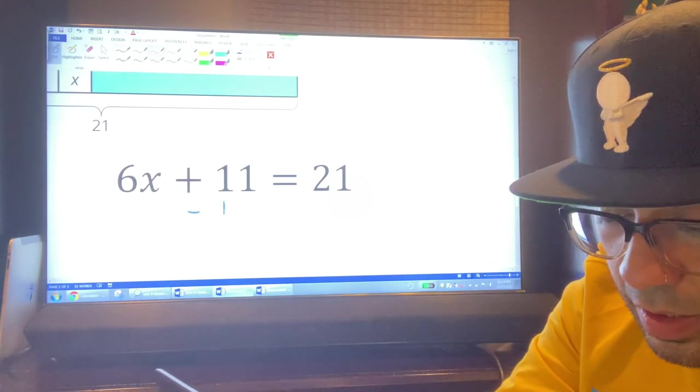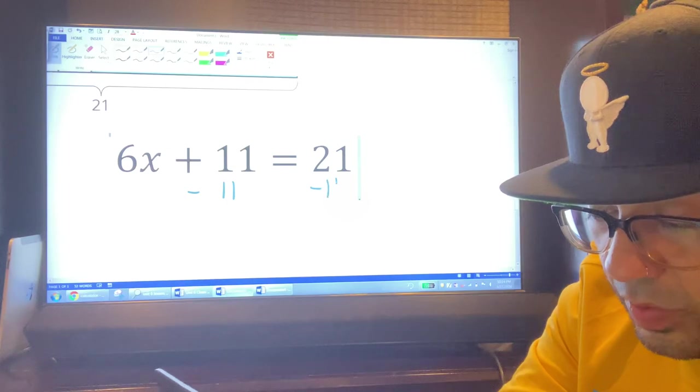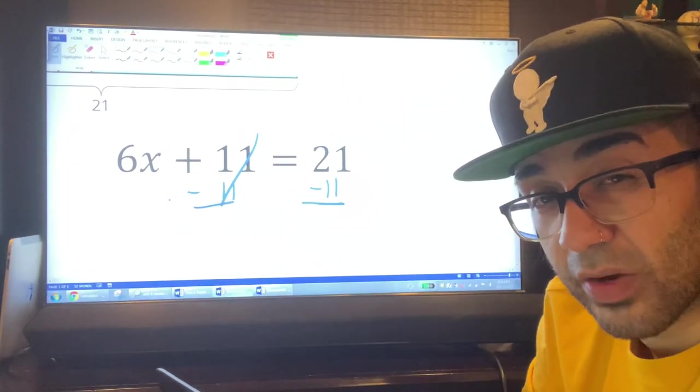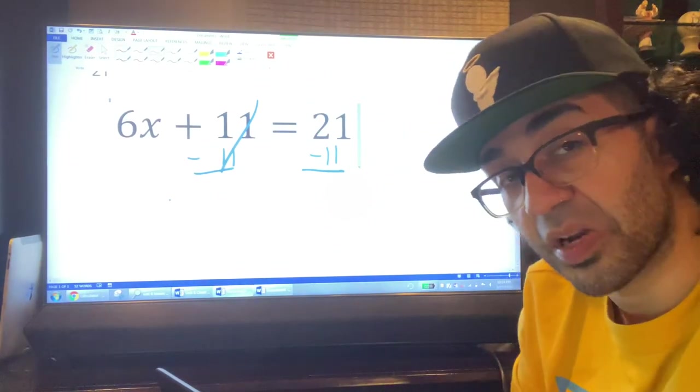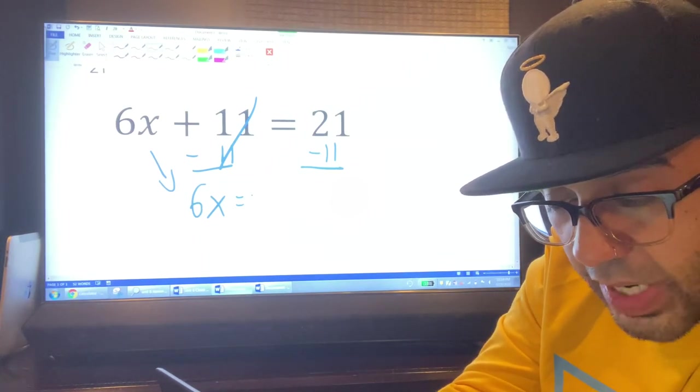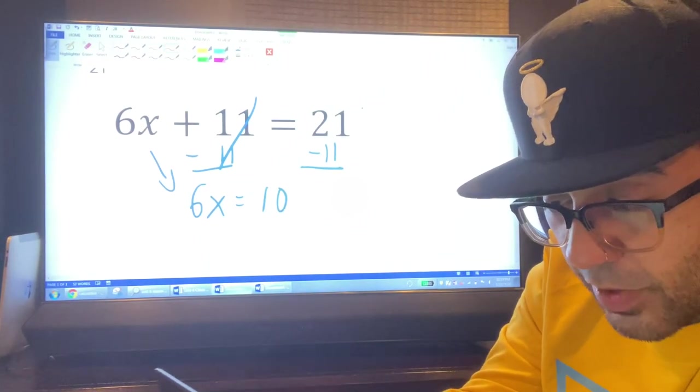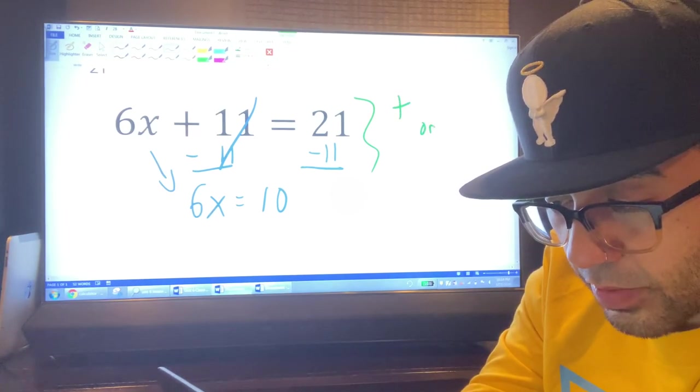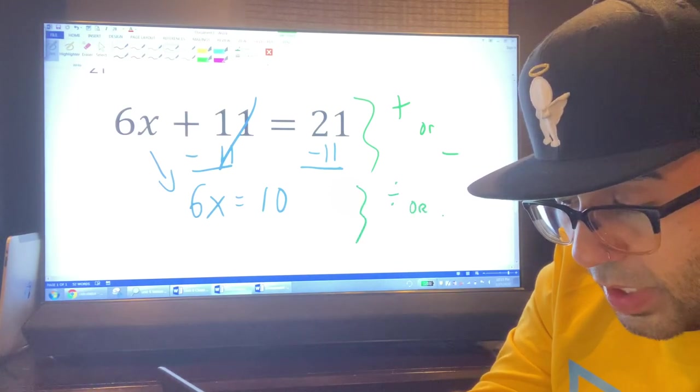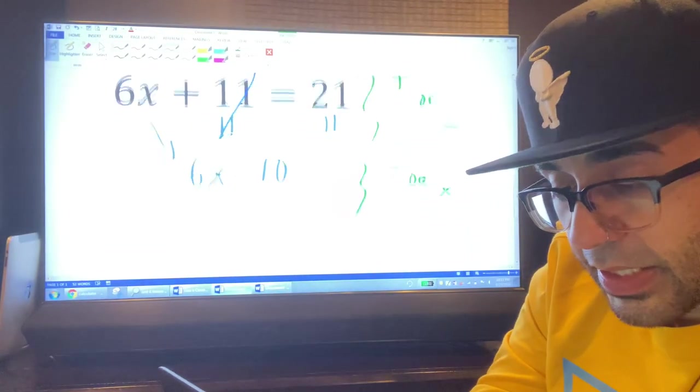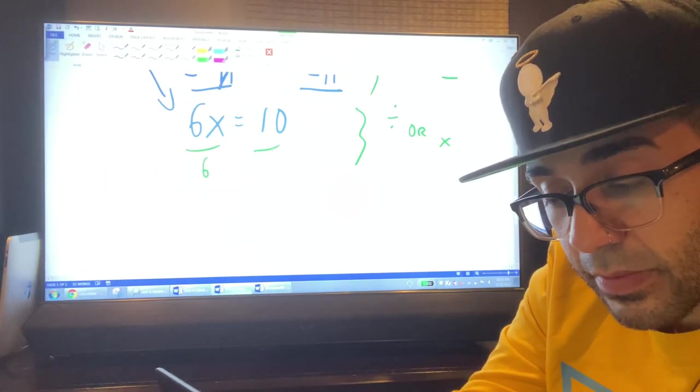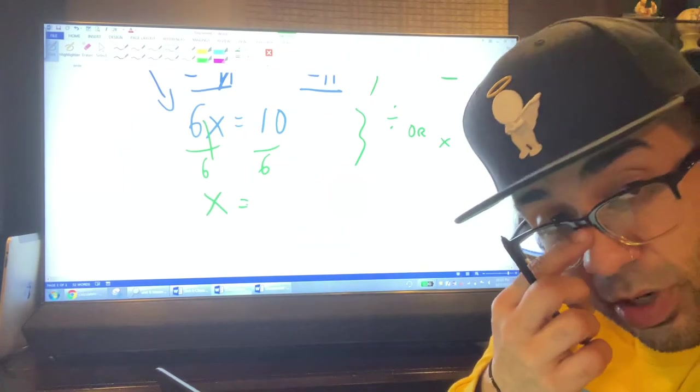First thing I would suggest to do is to subtract 11 from both sides. And I subtract 11 from this side as well. My eighth graders that may be watching, this is directly related to you. This is a way they really show you how to solve things algebraically. Remember, there's not a one size fits all. 6X, 21 minus 11 is 10, right?